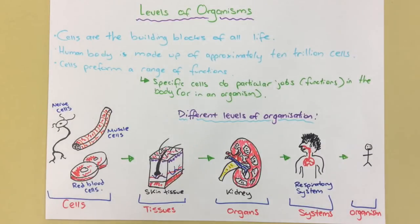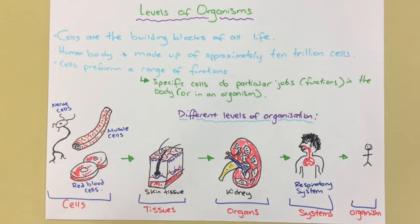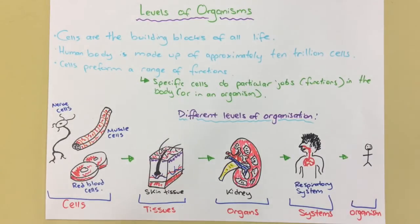Let's sum up what we've talked about. Cells are the building blocks of all life — there are lots of them in the body and they each perform a particular job. The different levels of organization from smallest to largest are: cells, tissues, organs, systems, and then the organism. Thank you for watching — make sure you like the video, subscribe to my channel, and watch it again if there's a point you missed.